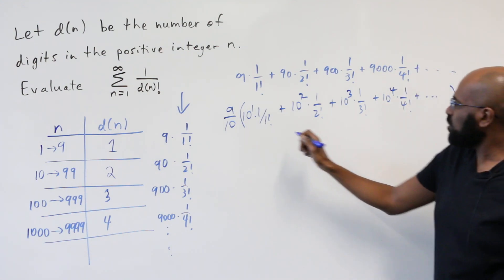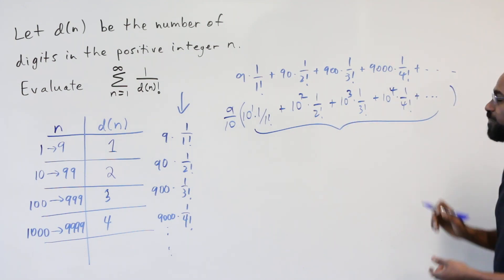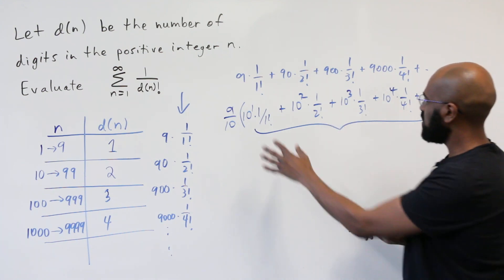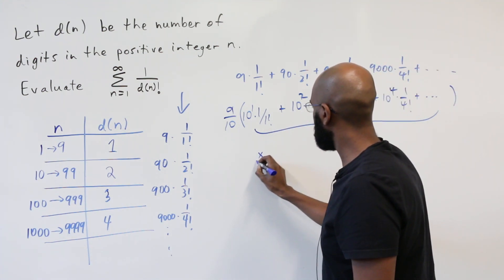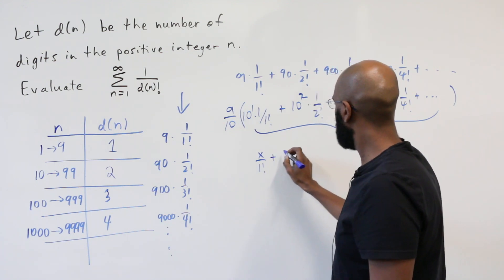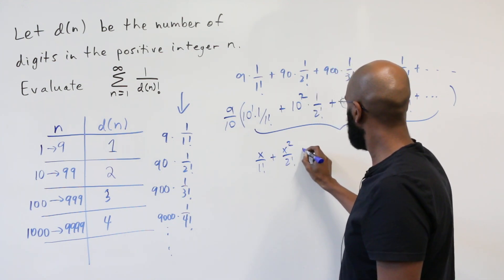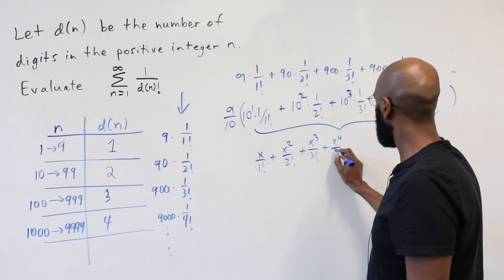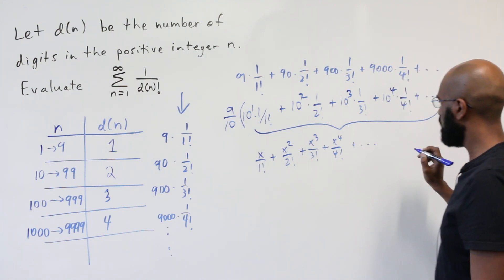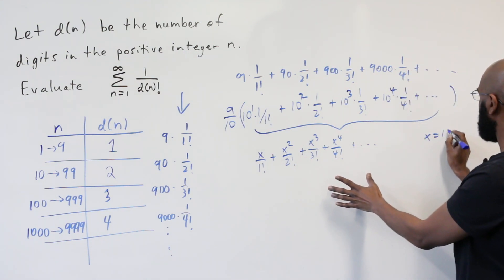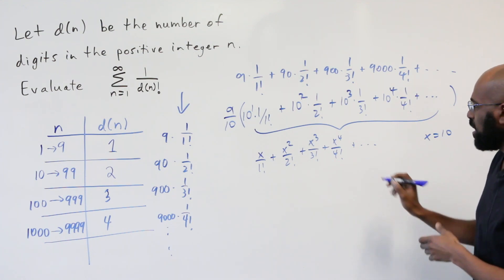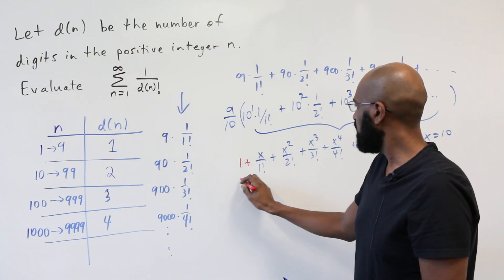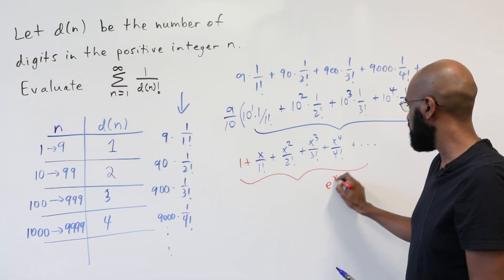Okay, so now the question is, what is this expression right over here? Well, luckily, calculus gives us some help. If you look at this, this expression looks like x over 1 factorial plus x squared over 2 factorial plus x cubed over 3 factorial plus x to the 4th over 4 factorial, etc., where we've evaluated this expression when x equals 10. Now, if we were to take this and add 1, this is the Taylor series expansion for e to the x,